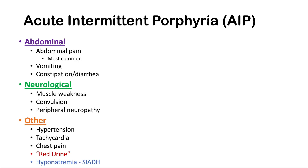Hyponatremia also occurs due to SIADH — syndrome of inappropriate ADH. So if you see an individual with neurovisceral symptoms, consider acute intermittent porphyria on your differential diagnosis, although this condition is still very rare.